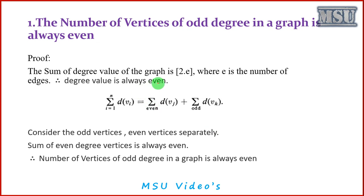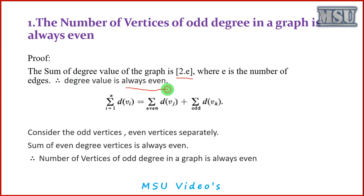The sum of degree values of the graph is 2 times the number of edges. In a graph, there are e number of edges. So the total degree value of a graph is always 2 times the number of edges, where e indicates the number of edges. Therefore the total degree value of a graph is always an even number, since 2 times any number becomes an even number.